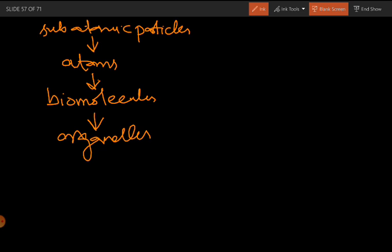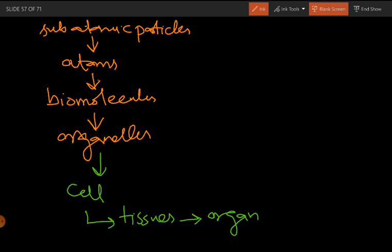Different organelles combine together and form the cell. Similar cells when combined form tissues. Many different tissues combine together and form an organ. Different organs assemble together and form the organ system. When different organ systems assemble, they form a complete organism.